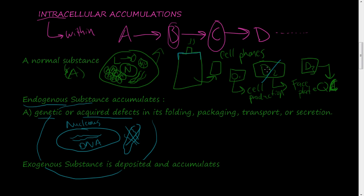In this process of producing and excreting proteins or molecules to be shipped off to other parts of the body, department two is out - it can't work. Everything that department one is producing just starts accumulating. Substance B starts accumulating because department two is damaged and it can't convert substance B to, say, substance F to be secreted outside the cell.